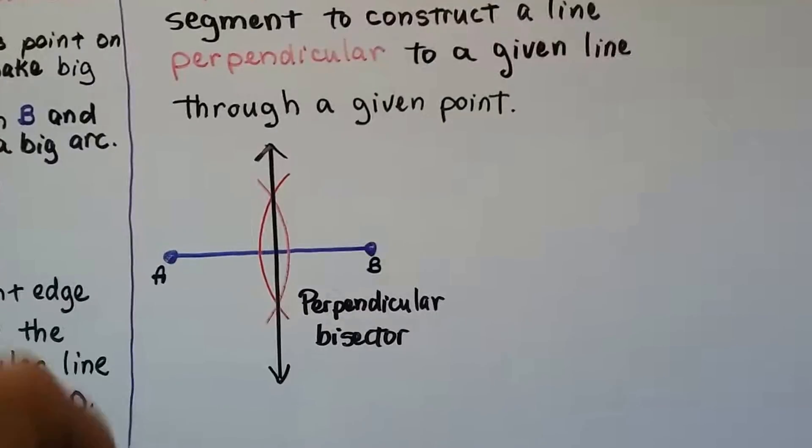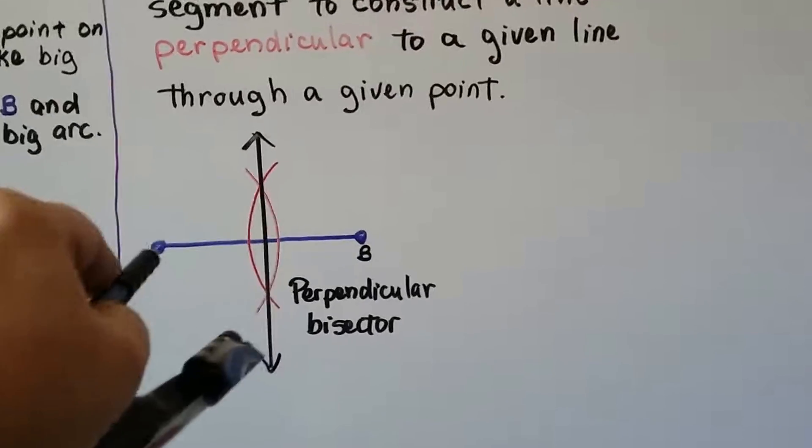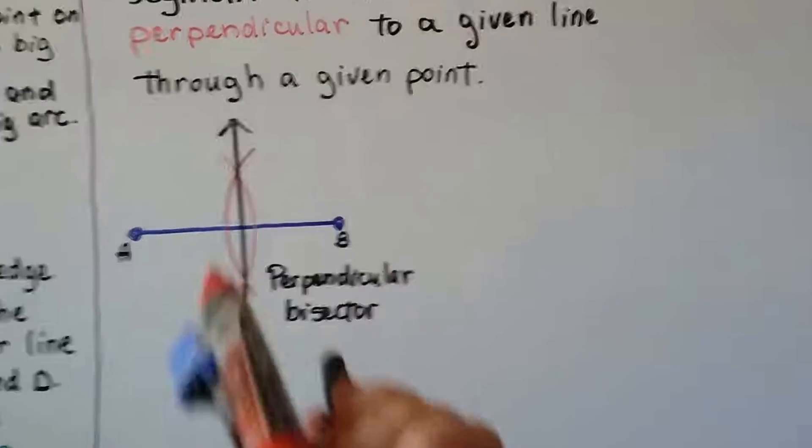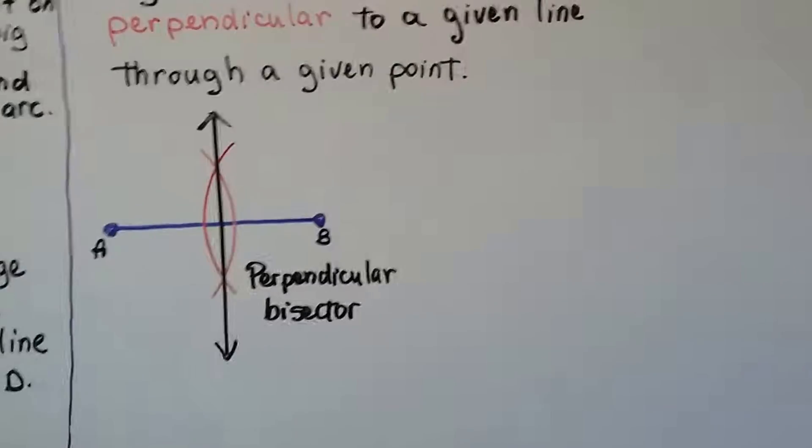It was already given to us. So we just put the point on A, make an arc, put the point on B, make an arc, and draw the line through it.